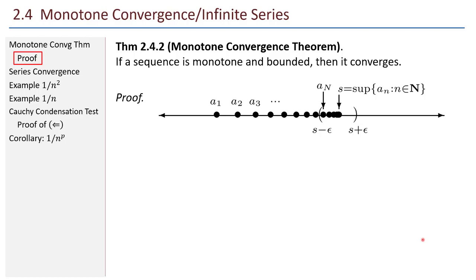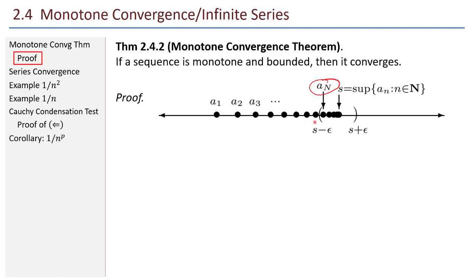The picture kind of gives it away. I have a sequence that is increasing. If I take the terms of that sequence and think of them as a set, the set is bounded. So by the axiom of completeness, there is a supremum. It turns out that supremum is a good choice for the limit of this sequence. If I go left and right by epsilon, there eventually comes a point where the sequence enters within that epsilon neighborhood and never escapes.